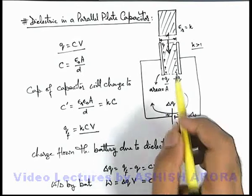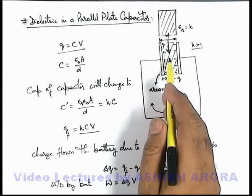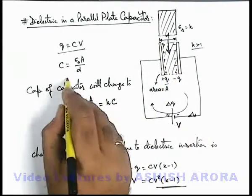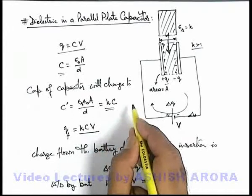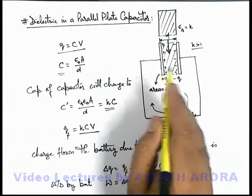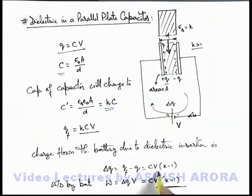So always remember that whenever a dielectric is inserted in a parallel plate capacitor, its capacitance increases from C to kC. And if it is connected across a battery, to achieve a new steady state, battery will supply an excess charge CV into k minus 1. In the process battery will do a work CV squared into k minus 1.